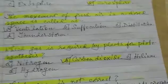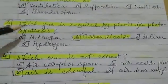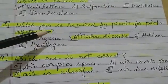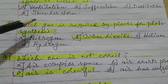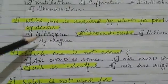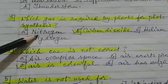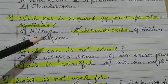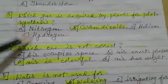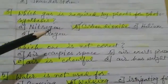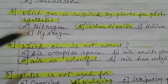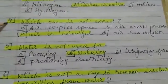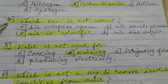Number 3: which gas is required by plants for photosynthesis? Option A) nitrogen, B) carbon dioxide, C) helium, D) hydrogen. The correct option is carbon dioxide, option B.